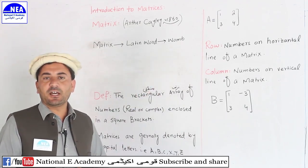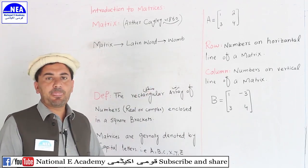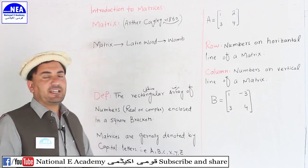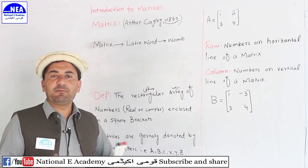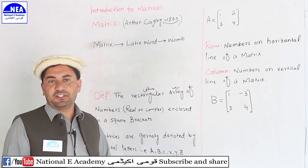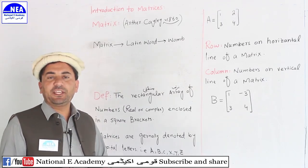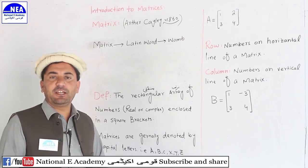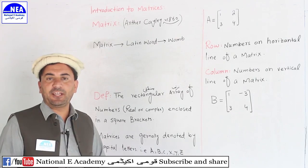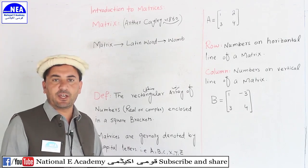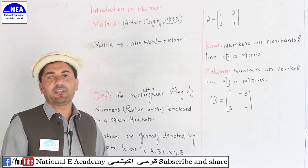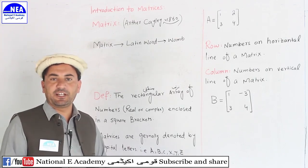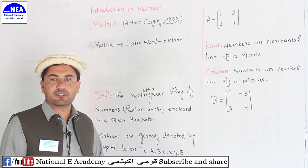Similarly, in a matrix, different numbers come together. When we perform an operation on these numbers — that operation is called the determinant — we will discuss it in detail later, insha'Allah.